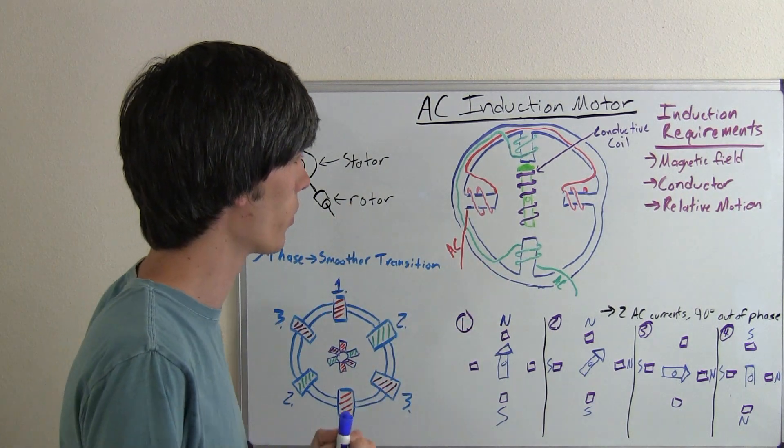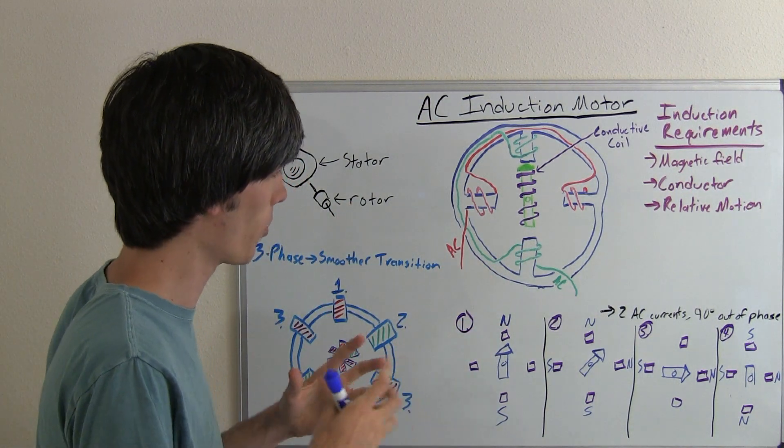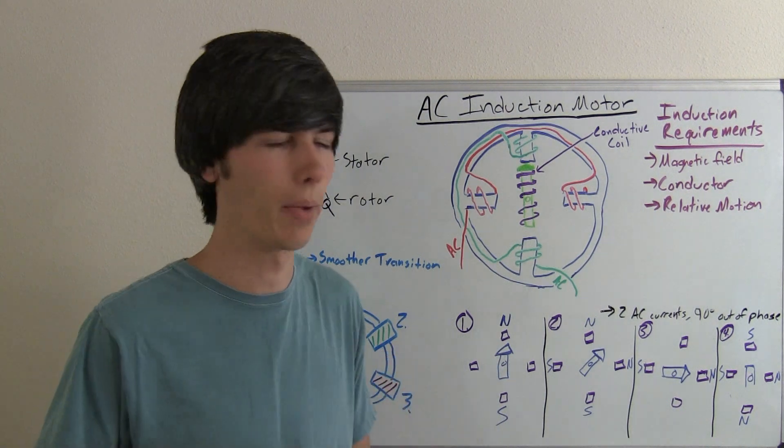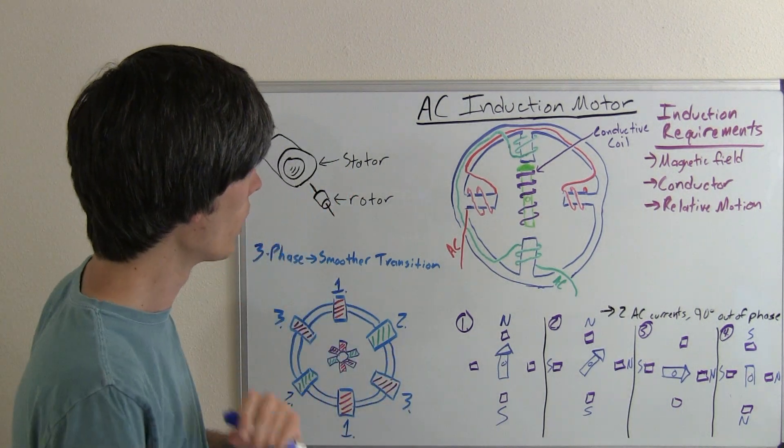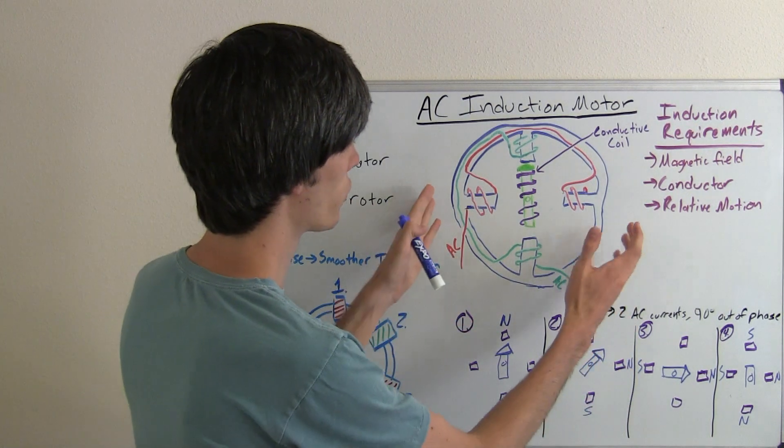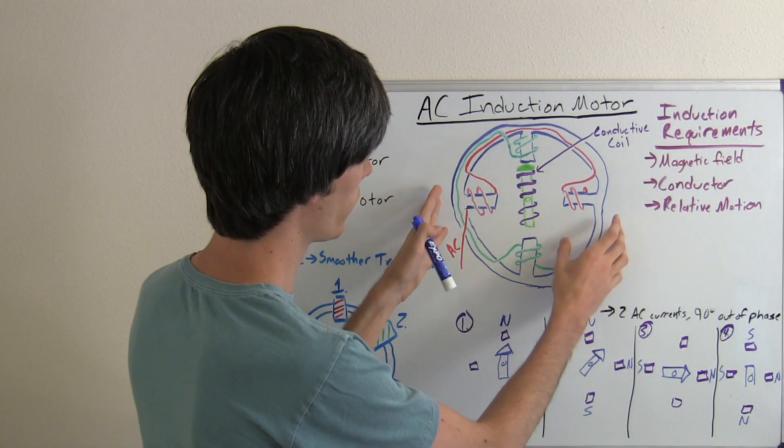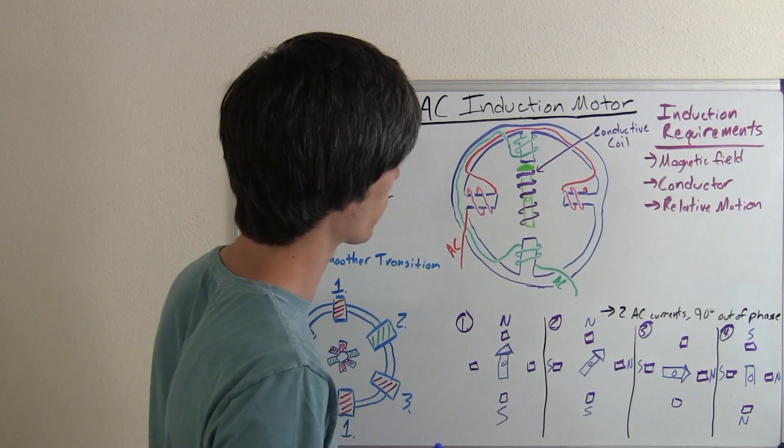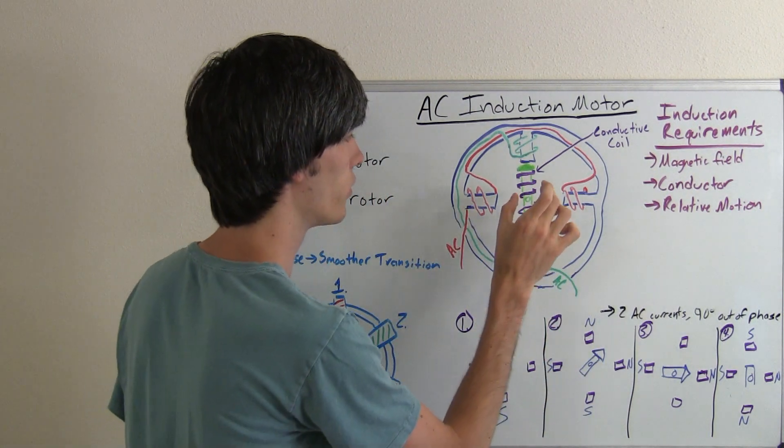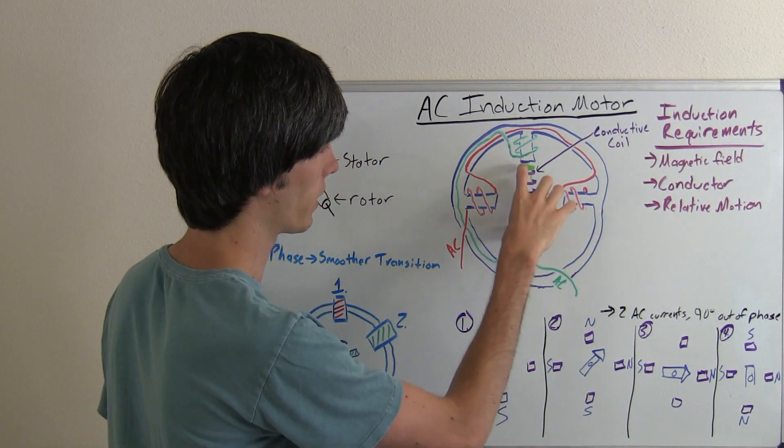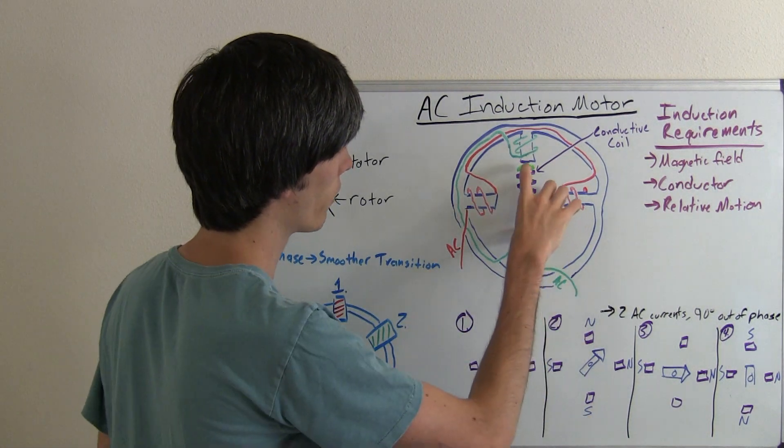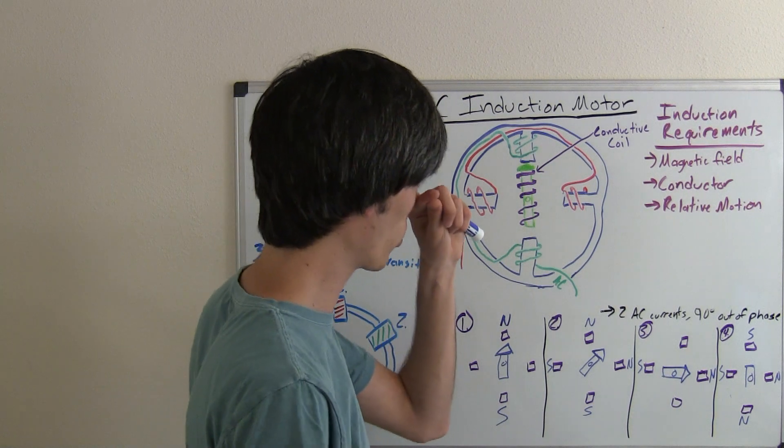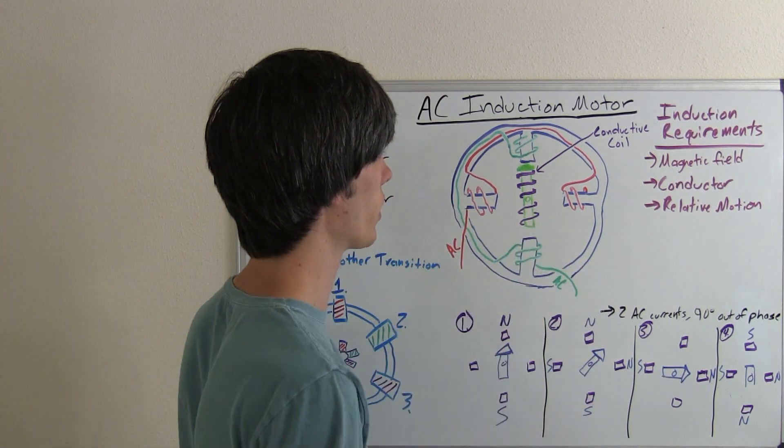So, AC induction motors, basically there are no permanent magnets used. All of the magnets are created with electromagnets. So what we've got going on is just like in our AC motor that you've seen the video of, where you've got these electromagnets and the separate alternating coils, the only difference is you do not have a permanent magnet in the center. Instead, you have a rotor that has coils wrapped around it. And so those coils are what we're going to be inducing a current into.